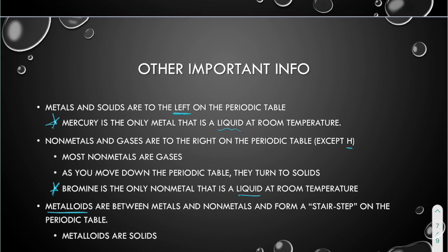Metalloids are substances that have characteristics of both metals and non-metals. They're sort of in between, and that's also where they're found on the periodic table, in between the metals and the non-metals. They tend to form a stair step on the periodic table. I'll show you that on the next slide. All of the metalloids are solids.